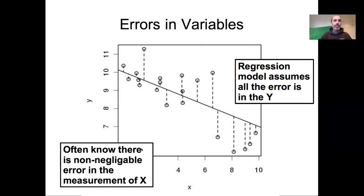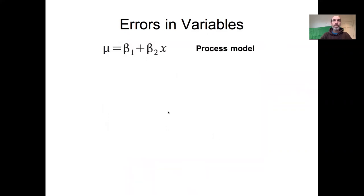That said, we also often know that there can be non-negligible error in our measurements of X's — the X's are not precise, they have some uncertainty associated with them. In a Bayesian framework we have the capacity to include this error in X using what's called the errors-in-variables framework.